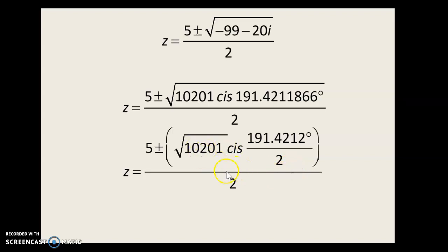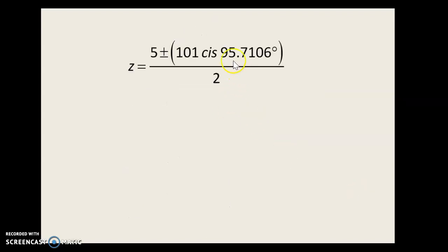Most of you probably recognize 10,201 as a palindrome and therefore as 101². And then the division here gives us 95.7106°. Now what? Well, now we're trying to add or subtract that number. So we need to take this cis form and convert it back to a + bi form. So here's the cis form. I'm just going to convert that to a + bi. And as we have seen, we often get nice numbers when we do that.